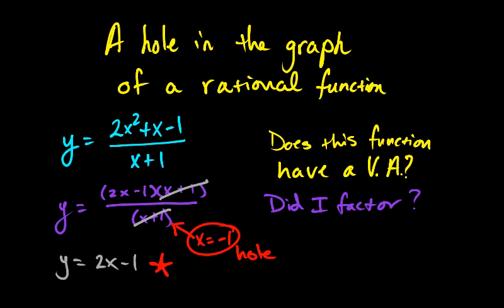And the way that you can find the coordinates of the hole, the hole is going to be a point. The way that you can find the coordinates of the hole is you take the x value where the hole's at, and you plug it into the reduced function. So negative one goes in, two times negative one is negative two, minus one is negative three.